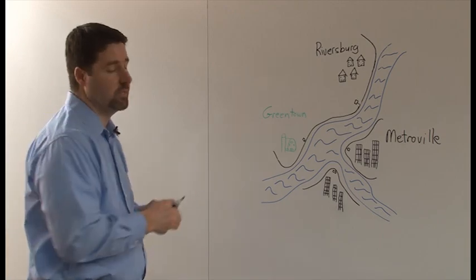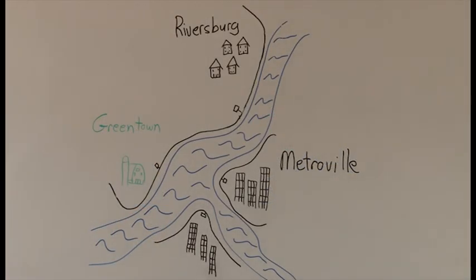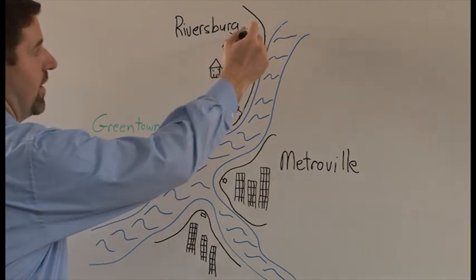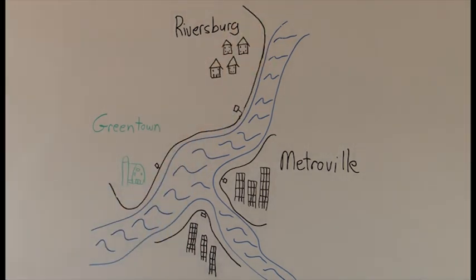However, these two segments make up a levy system. Because during a flood, if you were to have a breach in Riversburg, those flood waters would also impact Greentown.